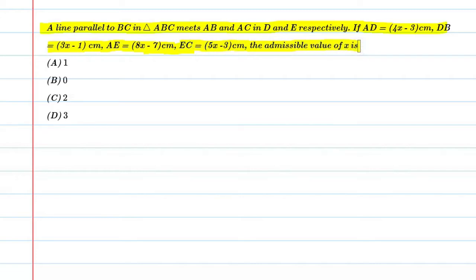Alright, so let's solve this question. First, we'll write the given information. The question states there's a triangle with a line parallel to BC that meets AB and AC at points D and E. We're given values for some segments and need to find the admissible value of x. Let's start by writing the given information.